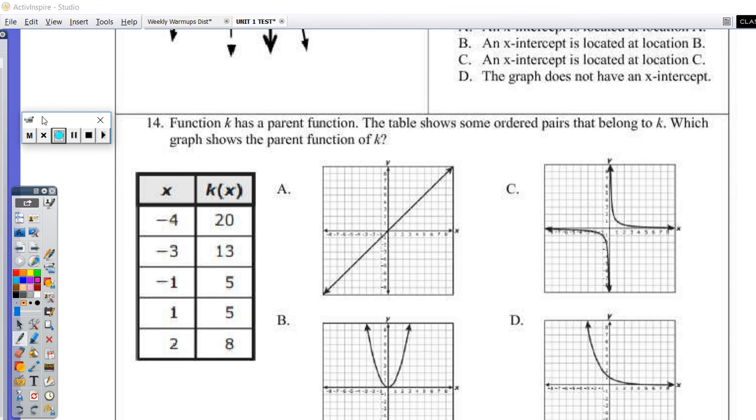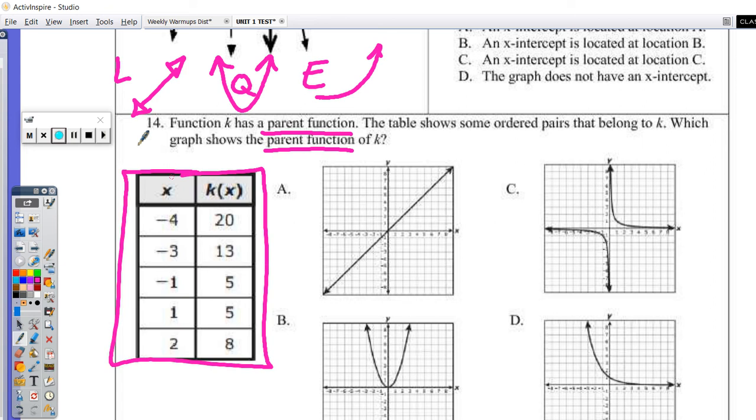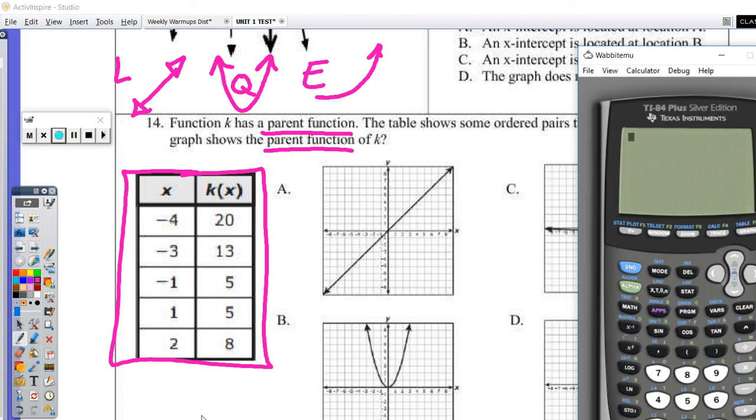Question 14. Function K has a parent function. We talked about parent functions. There are three different parent functions in Algebra 1 that we look at. We look at the linear parent function, the quadratic parent function, and the exponential parent function. Let's keep reading. The table shows some ordered pairs that belong to K. Which graph shows the parent function? We want to know which one of these graphs, A, B, C, or D, matches up to this table. You could plot those points on paper, or you can use stat plot, and that's what I'm going to do in this example.